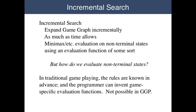The alternative is to do incremental search: on each move, expanding the tree as much as possible, and then making a choice based on the apparent value of non-terminal states. Now, in traditional game playing, where the rules are known in advance, the programmer can invent a game-specific evaluation function. For example, in chess, we know that states with higher piece count and greater board control are better than ones with less material or less control.